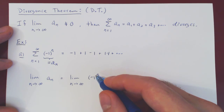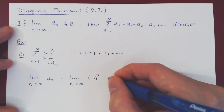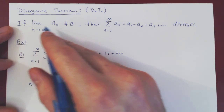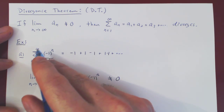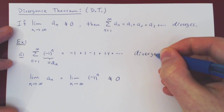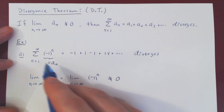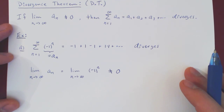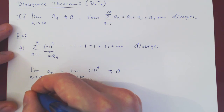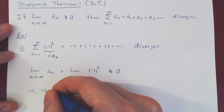Since negative 1 to the N does not get closer and closer to a unique real value, this limit does not exist — and therefore it is clearly not equal to 0. By the divergence theorem, the corresponding series diverges. You can see this intuitively if you look at the partial sums: summing the first term gives negative 1, and summing the first two terms gives negative 1 plus 1, which equals 0.